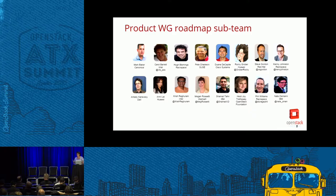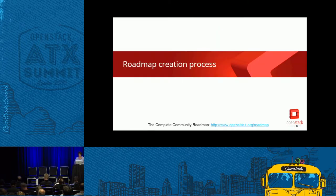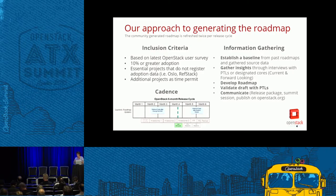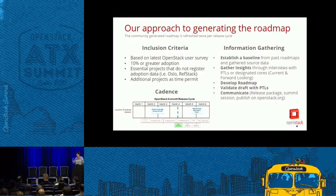This content was developed by a team of 16 people from the Product Working Group, representing companies across our community and across the different industries that we serve, working together with different projects to gather and synthesize information. The process for creating the roadmap starts with looking at what projects to include — we look at the user survey for projects being adopted by operators, looking for 10% adoption and above. We also include projects essential to an OpenStack deployment like Oslo and RefStack, and projects that are new or seeing rapid adoption.